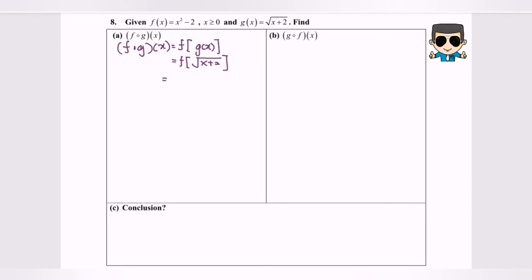Next I'm going to substitute g(x) into the function f(x), so we will have square root x plus 2 bracket square minus 2. Now we're going to simplify and we will have x plus 2 minus 2. So finally, f composed with g is equal to x.